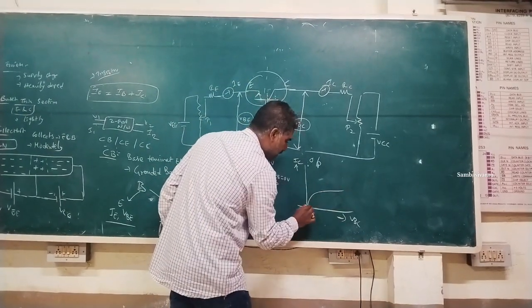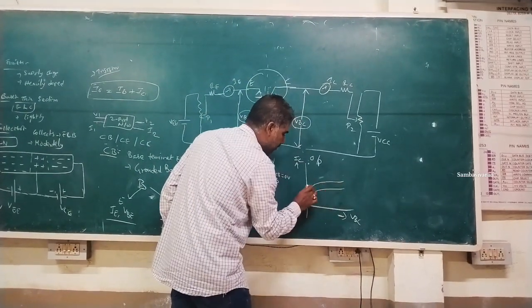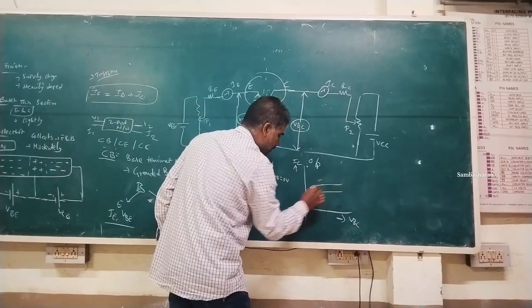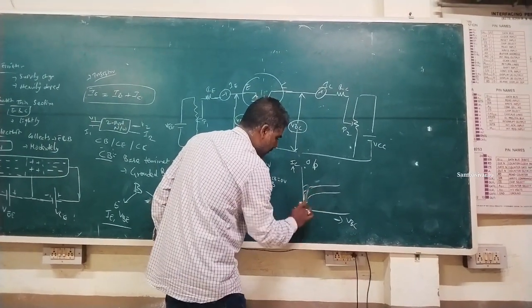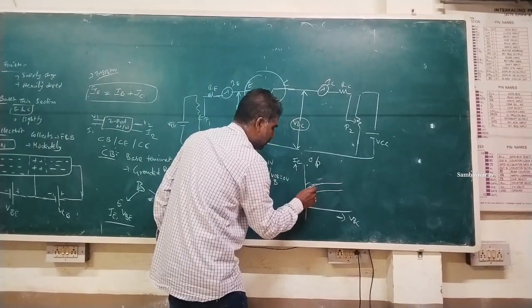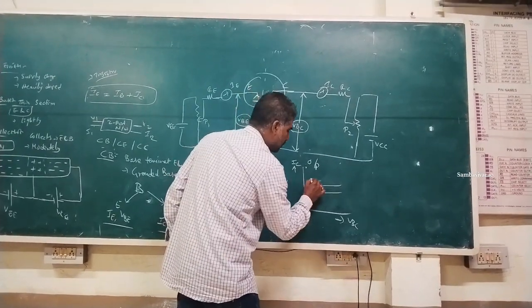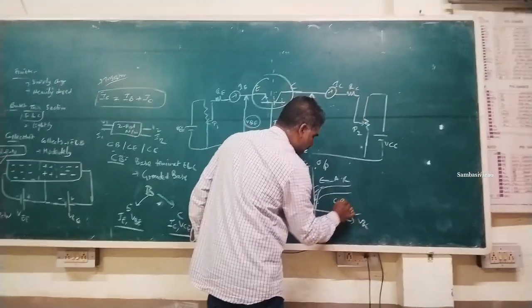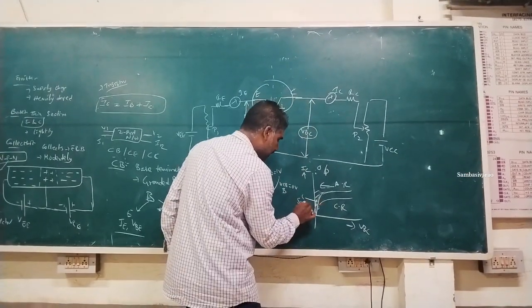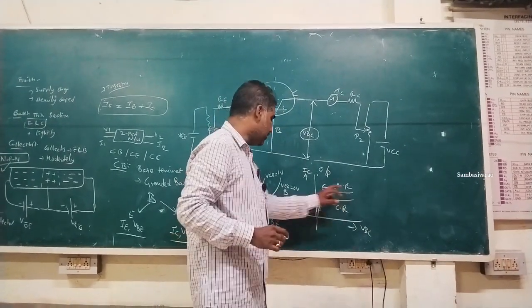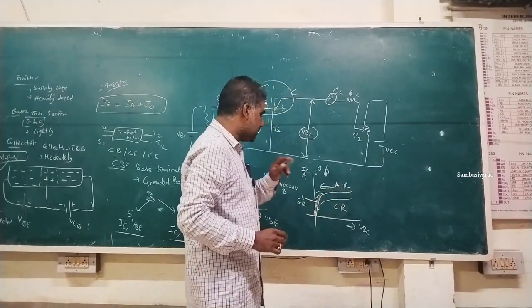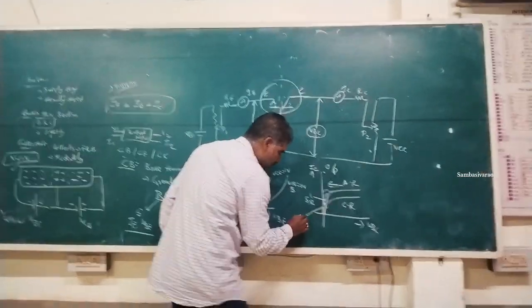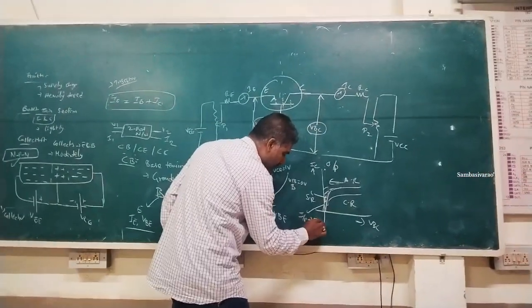The output characteristics graph is divided into three regions: cutoff region, active region, and saturation region (to the left of the vertical side). In the saturation region, the input junction is forward biased.